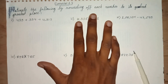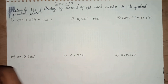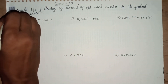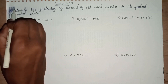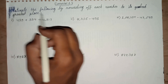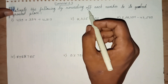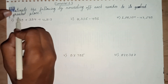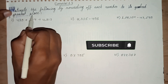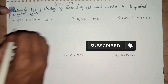Annamatram everyone, welcome back to this episode. This episode discusses Exercise 1.7, Question number 3 — estimating the following by rounding each number to its greatest place. Greatest place in every factor. Let's solve one by one.